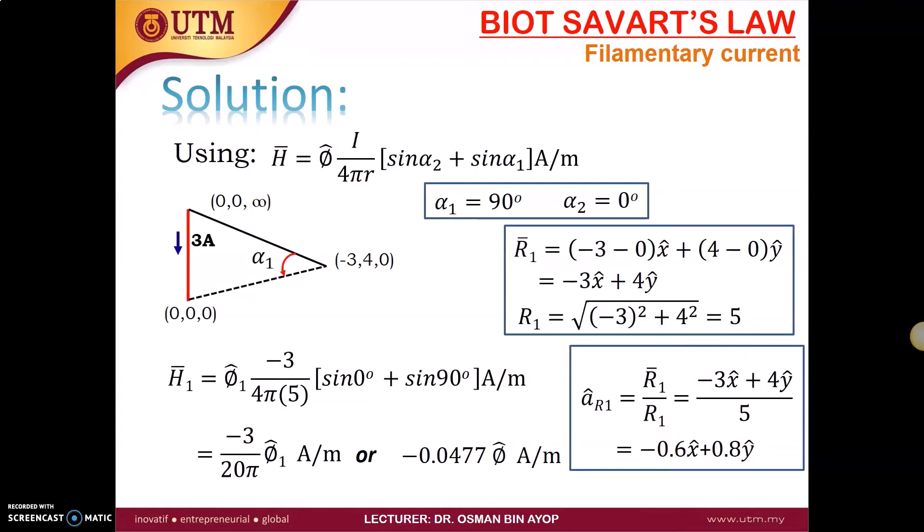Next, using this is what we have proved before. The H equal to phi I over 4πR [sin(α₂) + sin(α₁)] ampere per meter. So the sin alpha one is 90 degree. The sin alpha two is zero. So we put inside this formula. We obtain sin zero plus sin 90. And then here we have the magnitude of current, which is 3 ampere. Okay. So I put here as negative because the current is flowing in this direction. So this negative 3. And then I have R here. R here is this magnitude. Okay. The normal line, which is we can calculate by using the theorem Pythagoras.